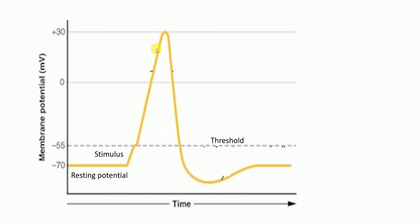This rising part of the graph is called depolarization, which occurs because of the opening of the voltage-gated sodium channel. The top of the graph is called the peak. The membrane potential reaches the peak because of the inhibition of the voltage-gated sodium channel by the inhibition gate.